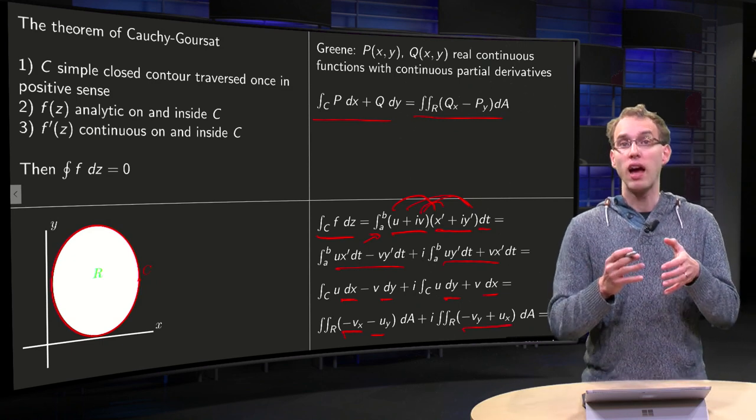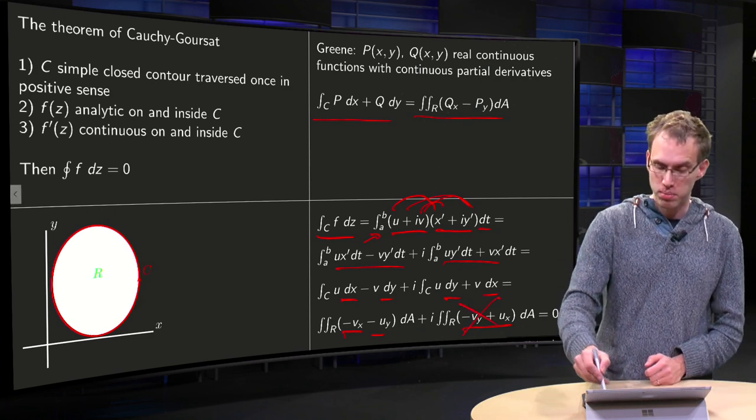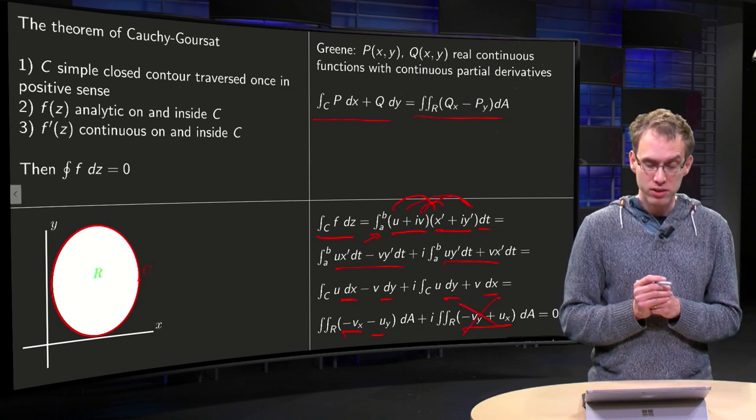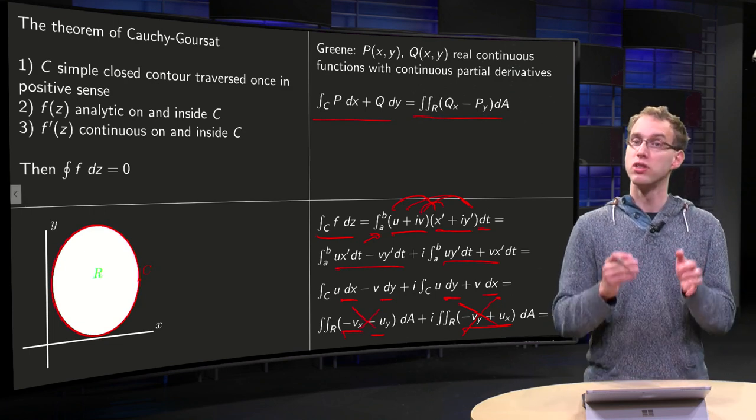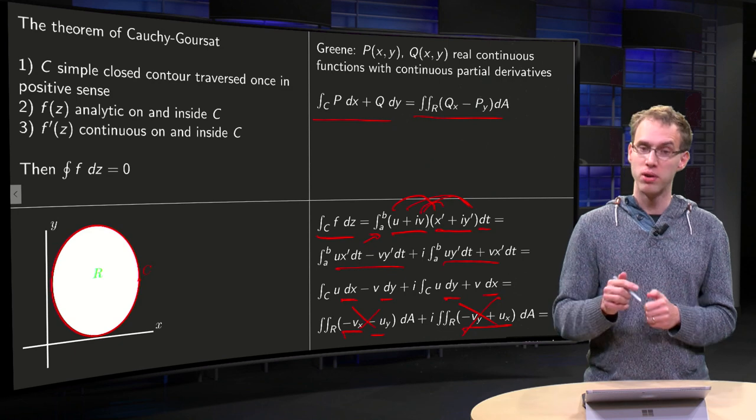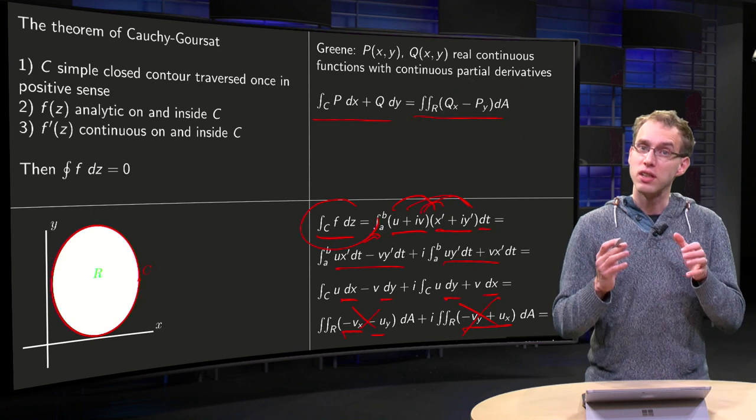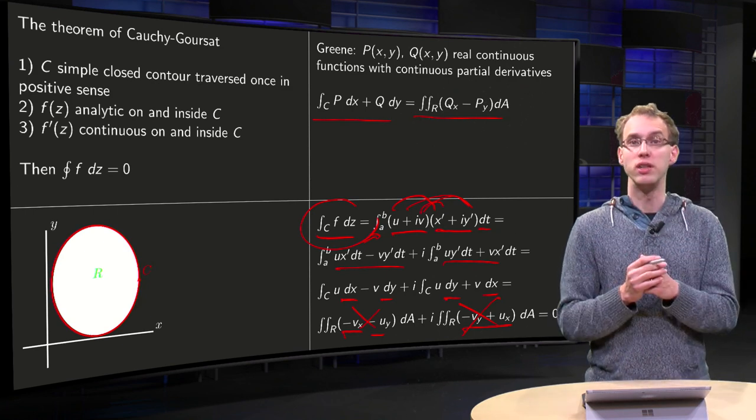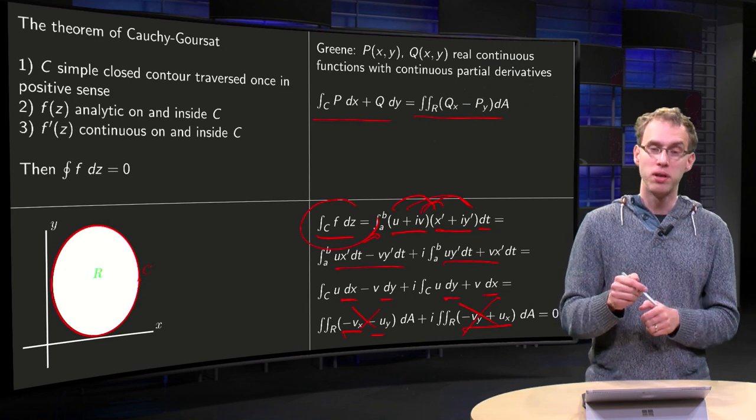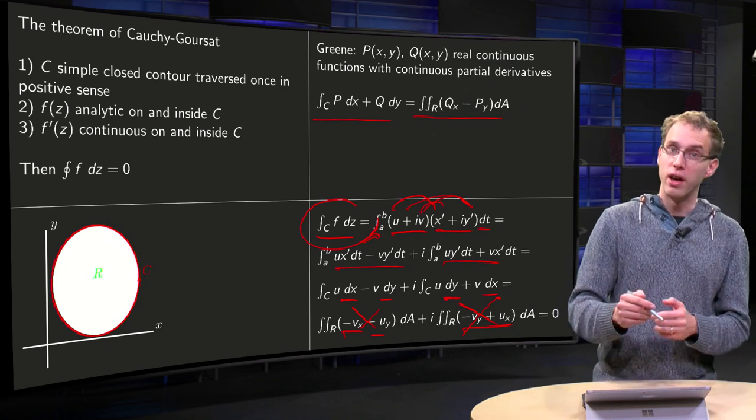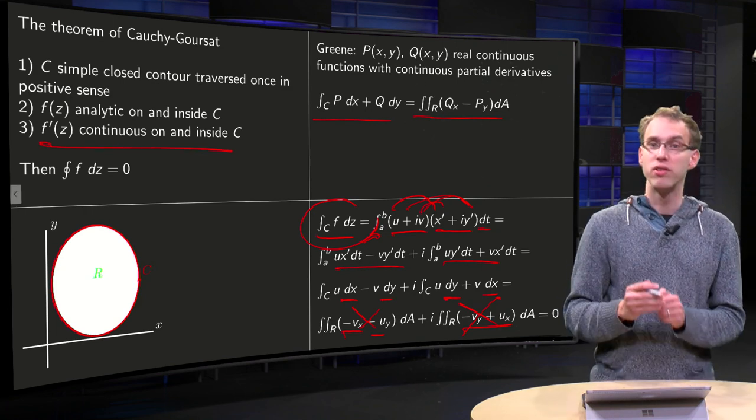But then we know that F is analytic, so we have the Cauchy-Riemann equations. U_x equals V_y, which means this term cancels out. And U_y equals minus V_x, which means this term cancels out. So, you get 0 plus 0 equals 0. So, the integral along C, F dZ equals 0. That's the Cauchy-Goursat Theorem. Proved the Cauchy version, but important later on. It is possible to generalize this and to drop this condition 3.